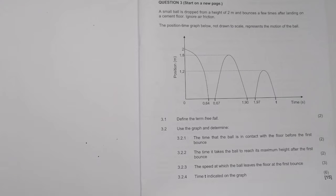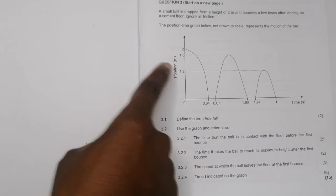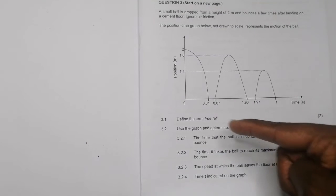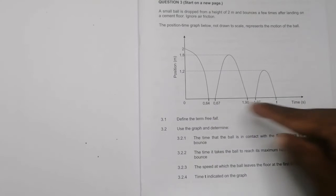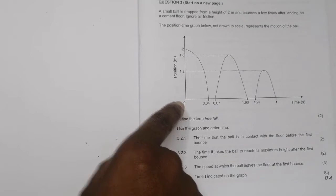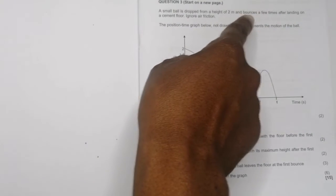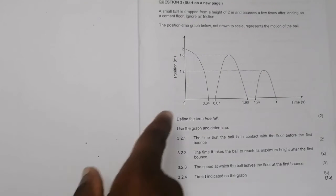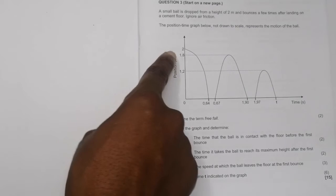Now they say use the graph and determine, first of all, the time that the ball is in contact with the floor before the first bounce. Now, may I please just take the time to discuss this with you before we go into the questions. So first of all, they give us a graph. They said it's a position versus time graph. So let's see what's happening there. So first, when I look at this position time graph, it seems to suggest to me that they have taken the ground as our zero position.